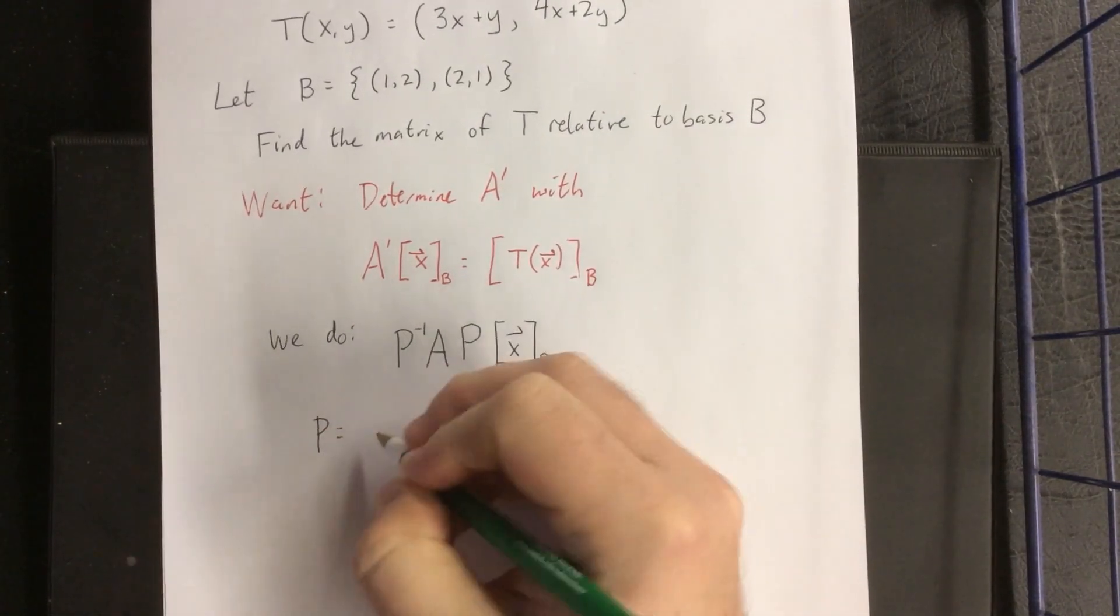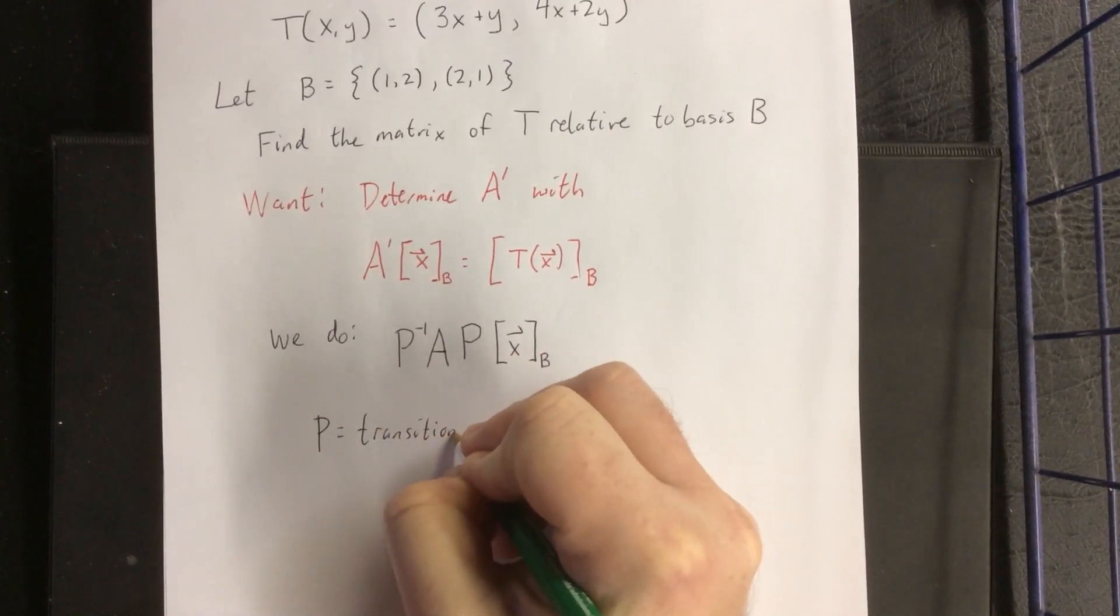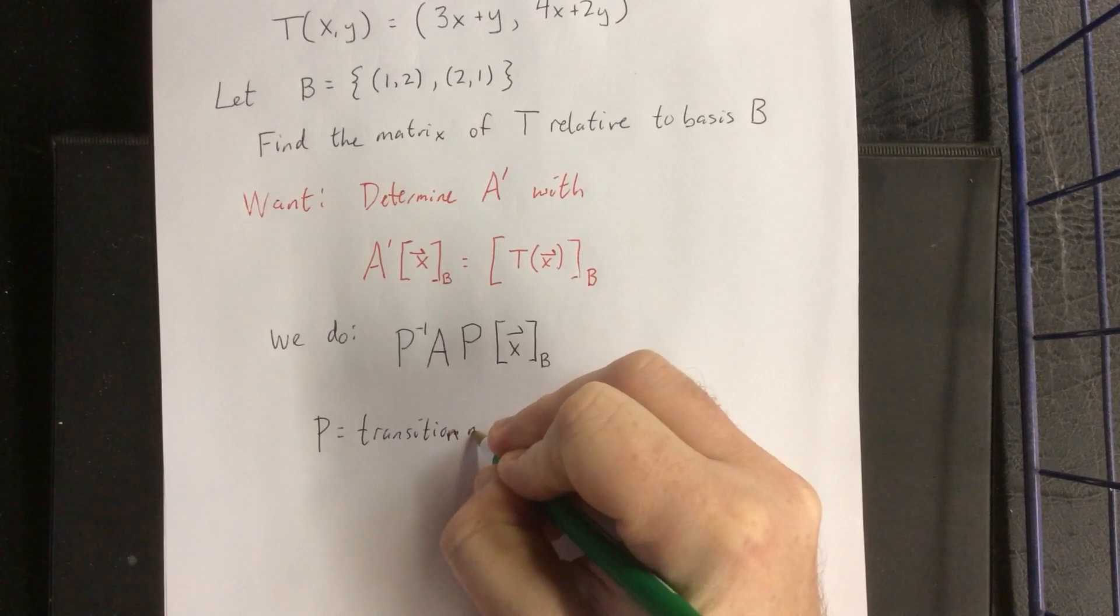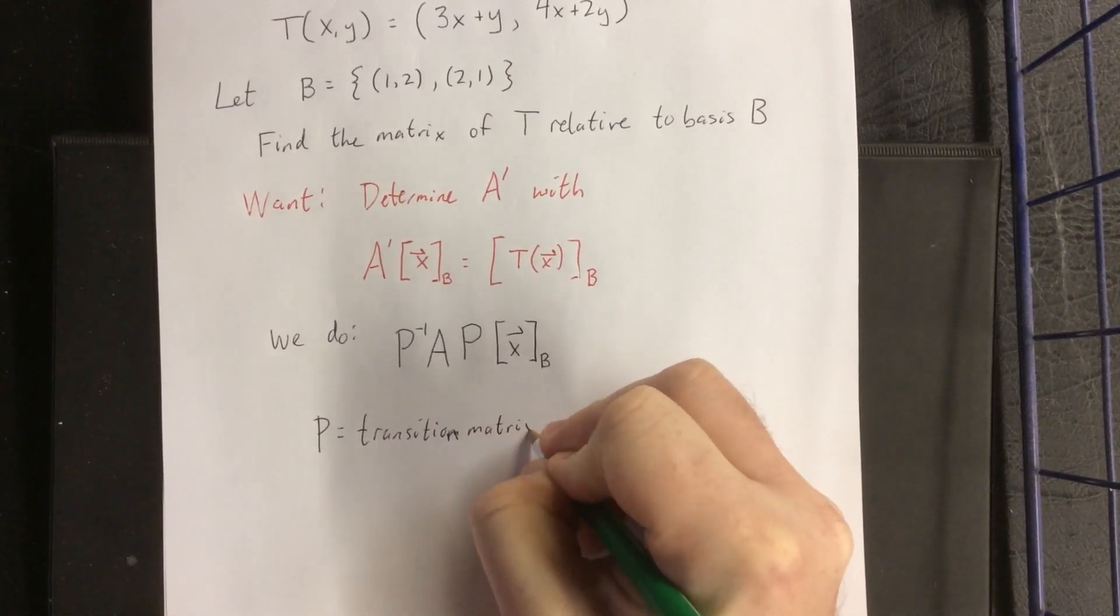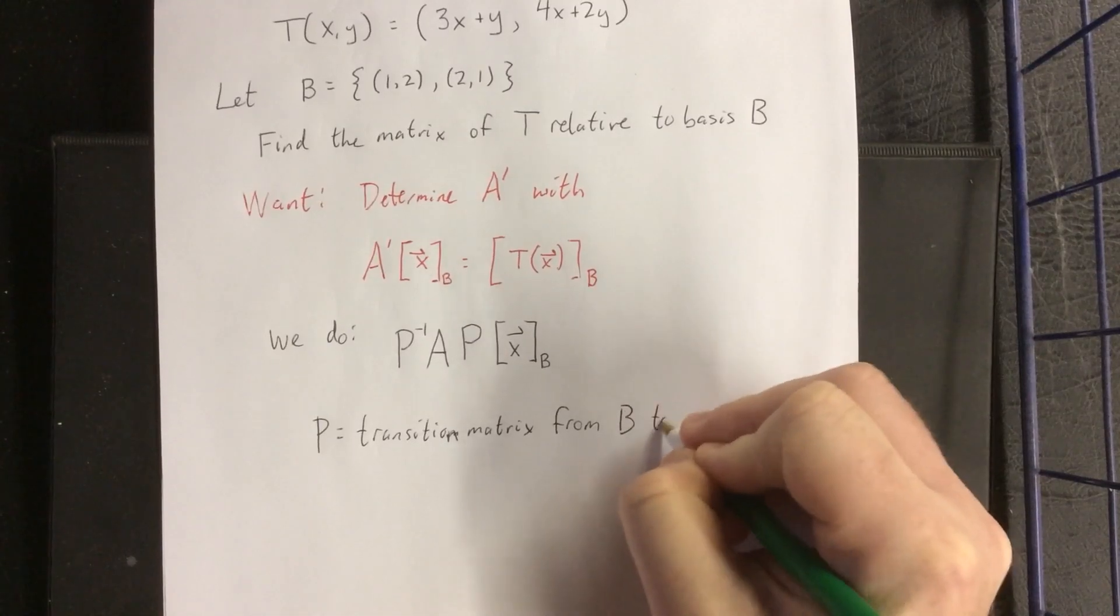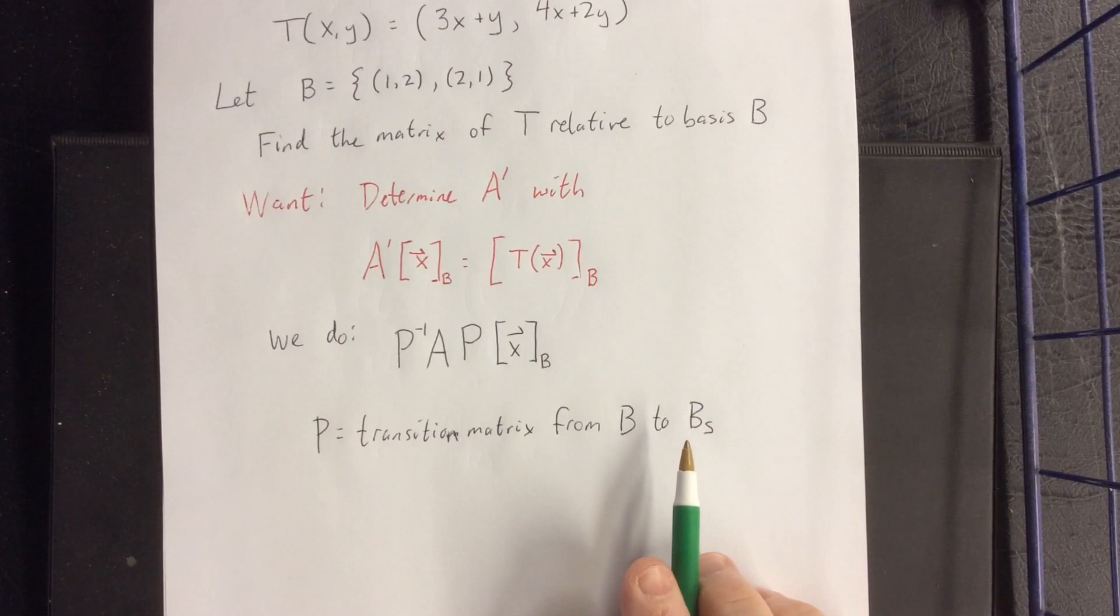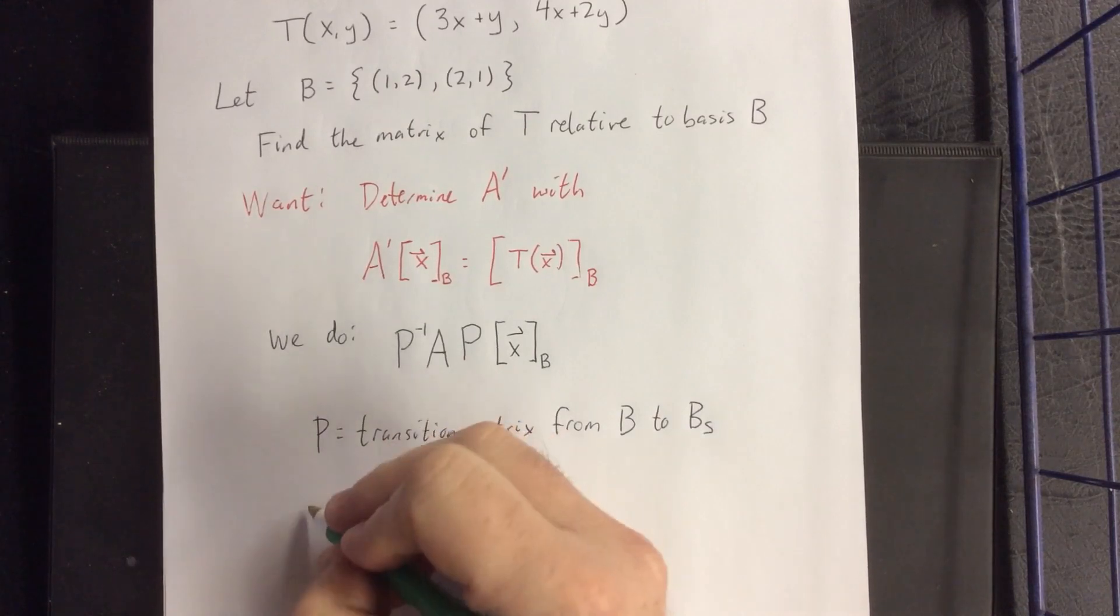So a couple definitions for us. P is going to be the transition matrix from B to the standard basis. Notation I like to use for the standard basis is capital B for basis, little s for standard. I realize that sounds like BS but I'm going to tell you that anyway.